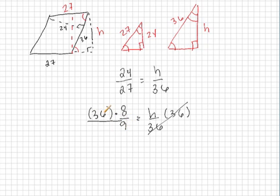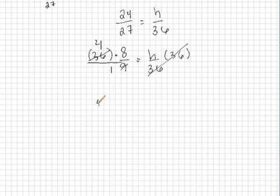Well, 36 has a factor of 9. So, let's factor out a 9 from the top and factor out a 9 from the bottom. This will reduce to 1 on the bottom and this will reduce to 4 on top. So, what we actually have is 4 times 8 is equal to h, which is equal to 32. And that's your final answer.